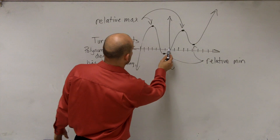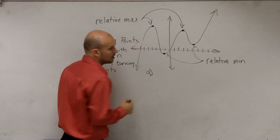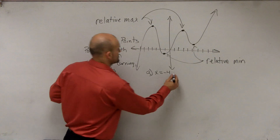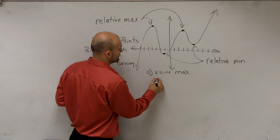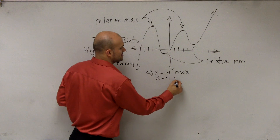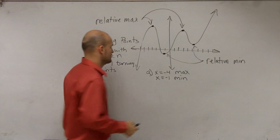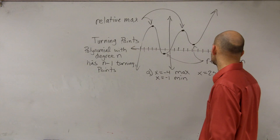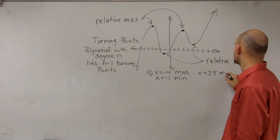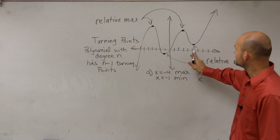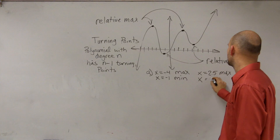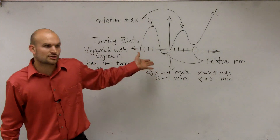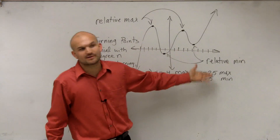We have our first turning point at x equals negative 4, and that is a relative max. We have x equals negative 1 — that's a relative min. We have one around x equals 2.5 — we're estimating — and that's a relative max. And then we have another minimum point at x equals 5. So we estimate the x-coordinate of each turning point and determine whether it is a max or a min.